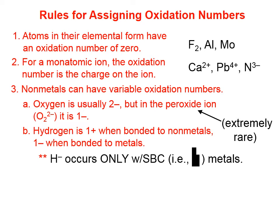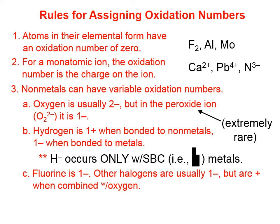Hydrogen will only bond with a limited number of metals — what I call the strong base cations (SBC). On the periodic table, those are on the left side: in the alkali metals group, lithium, sodium, potassium, rubidium, and cesium; and in the alkaline earths, calcium, strontium, and barium. When hydrogen is bonded to these metals, it is the hydride ion and its oxidation number is 1−. When hydrogen is bonded to non-metals like fluorine, chlorine, oxygen, or nitrogen, it's 1+. Fluorine is always 1−.